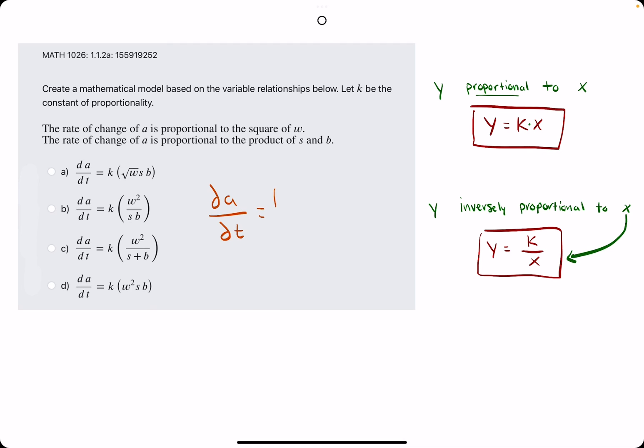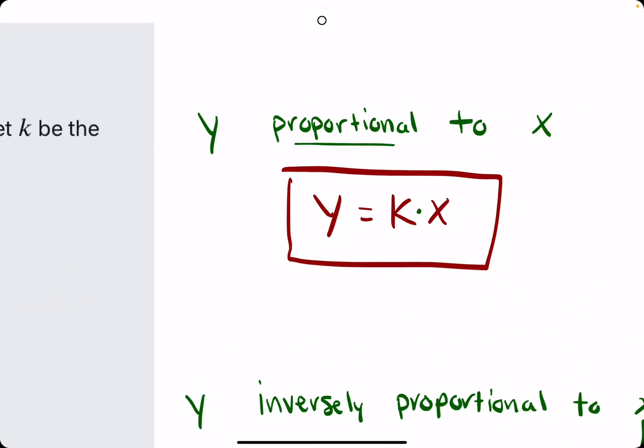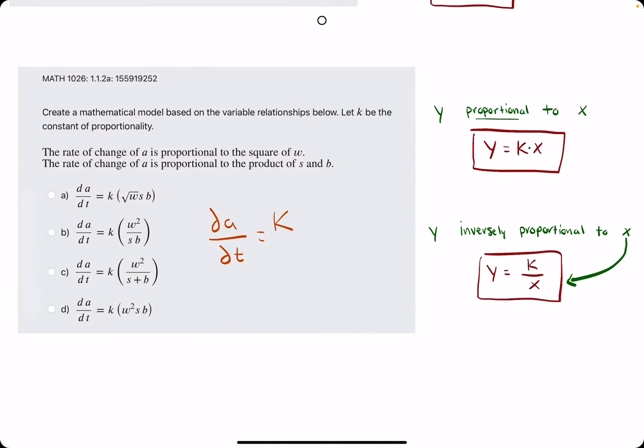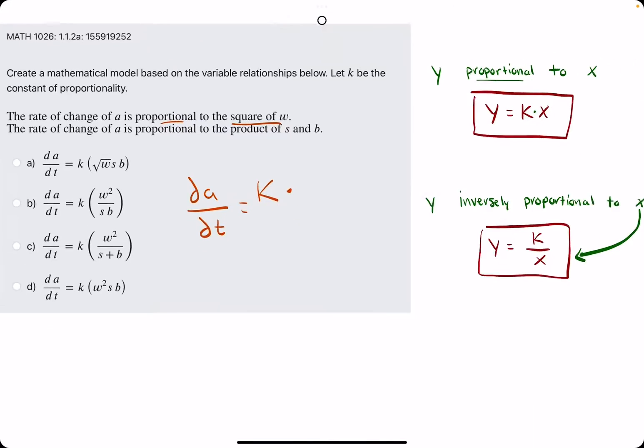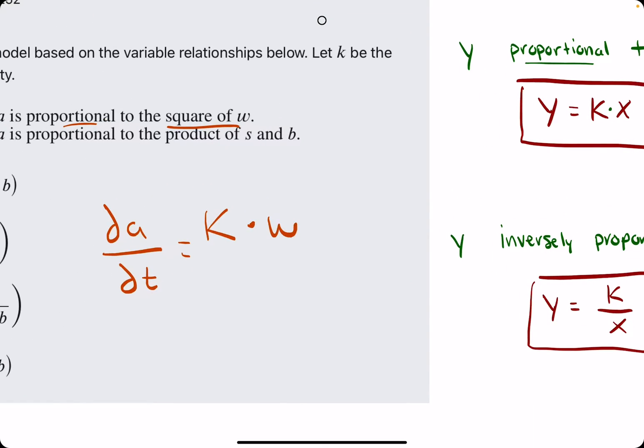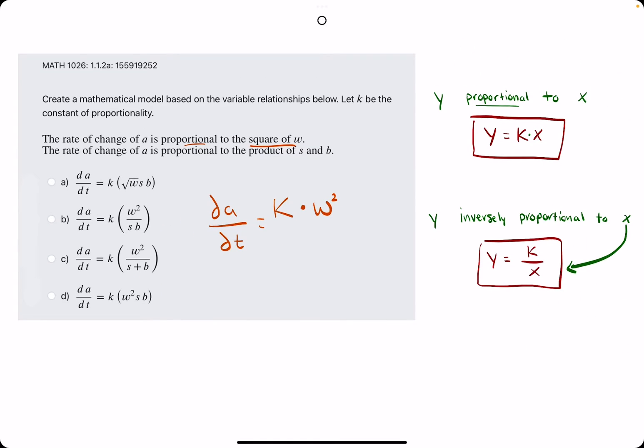Proportional meaning it'll be represented by the product of some constant K and whatever they mention. They say proportional to square of W, so we'll have W and we'll square it. That's all we need to do with that first statement.